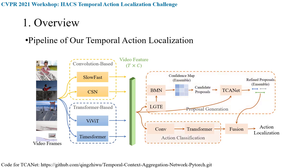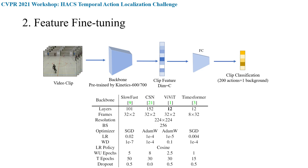Apart from proposal generation, video-level features are also utilized to perform video-level action classification tasks. Finally, detection results are generated by fusing the refined proposals and classification scores. Although the models were pre-trained on Kinetics-600 and Kinetics-700 datasets, we still fine-tuned them on the HACS dataset. In fine-tuning, we classify each clip into 201 categories, which contains 200 actions and one background.